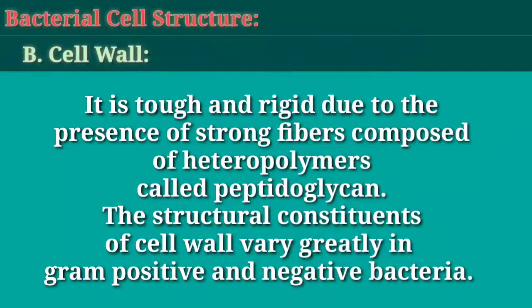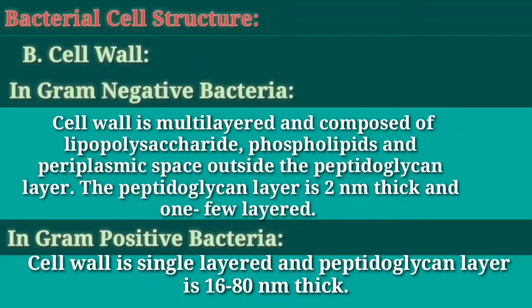B. Cell wall. It is tough and rigid due to the presence of strong fibers composed of heteropolymers called peptidoglycan. The structural constituents of cell wall vary greatly in gram-positive and gram-negative bacteria. In gram-negative bacteria, the cell wall is multilayered and composed of lipopolysaccharide, phospholipids and periplasmic space outside the peptidoglycan layer. The peptidoglycan layer is 2 nanometers thick and few-layered. In gram-positive bacteria, cell wall is single-layered and the peptidoglycan layer is 16 to 80 nanometers thick.